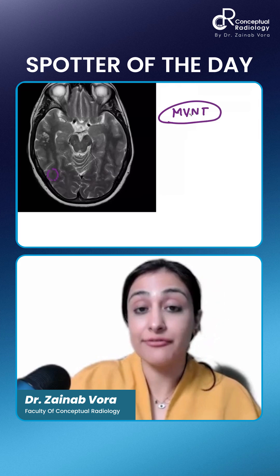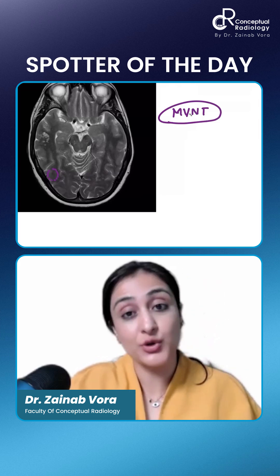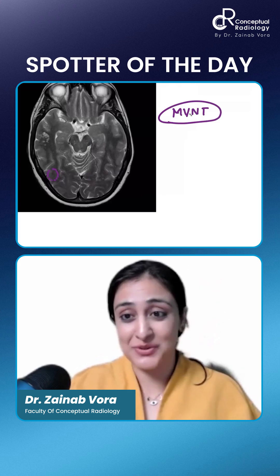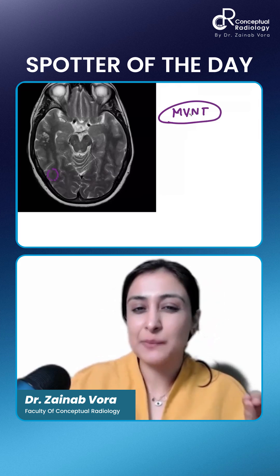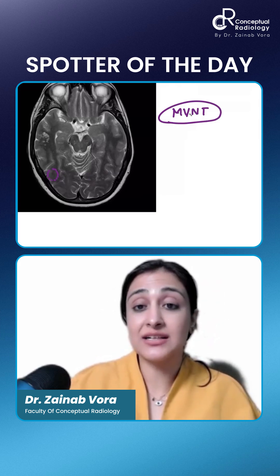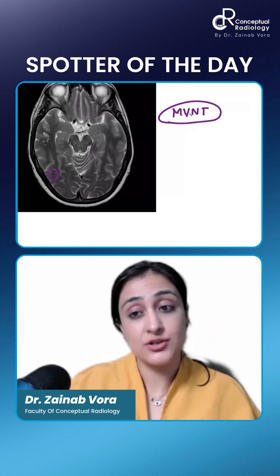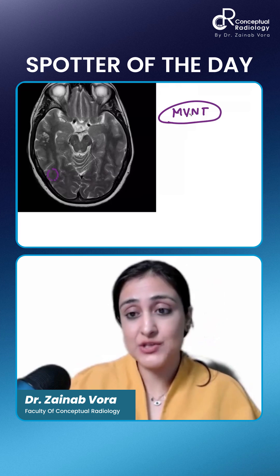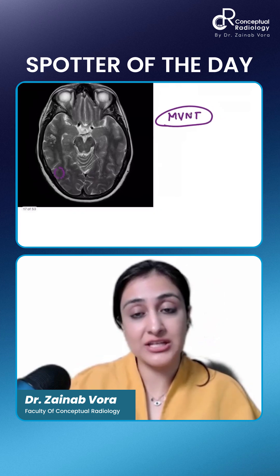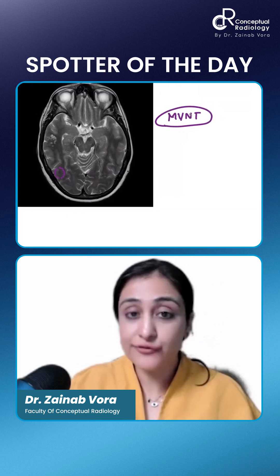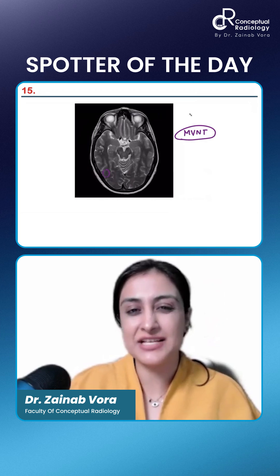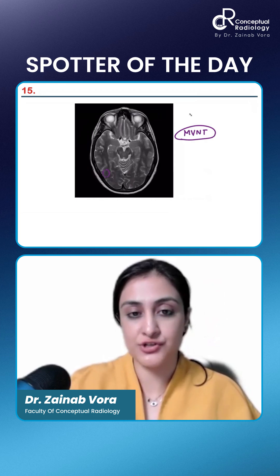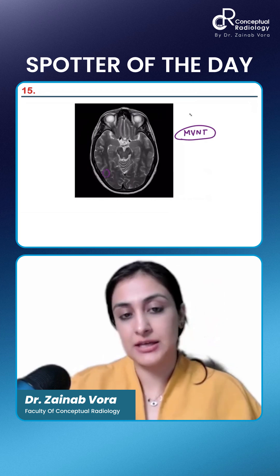Multinodular and Vacuolating Neuronal Tumor — MVNT is a serpiginous sulcal-based tumor. Both MVNT and DNET come under the neuronal spectrum, and this is a very expected spotter in the exams.